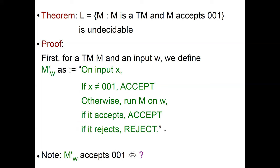Let's give another example. Let's consider the language of Turing machines M which accept a specific string — let's say 001. There's nothing special about 001, as you will see in a second. We claim that L is undecidable. So we're going to follow a similar strategy, but we have to modify the code a little bit. For a Turing machine M and an input W, we're going to define a new machine M'_W.